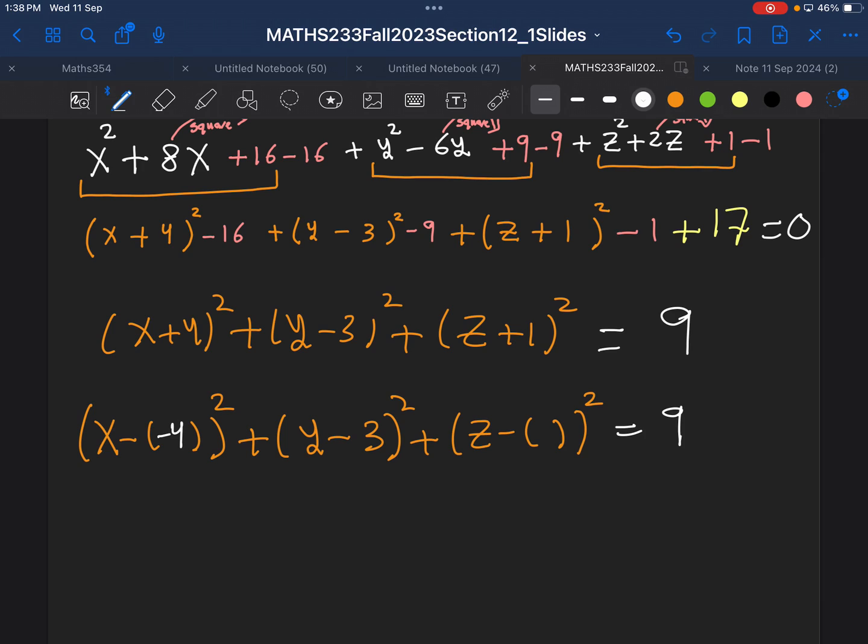It just separated them. Same thing for plus 1. I can write it as negative negative 1. And that directly will help me find what is the center. It is negative 4, 3, negative 1. What is the radius? The radius is the 9. But I take the square root, which will be 3. Remember, this is just square root. And that's it.